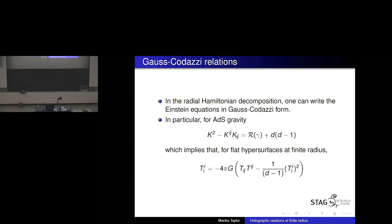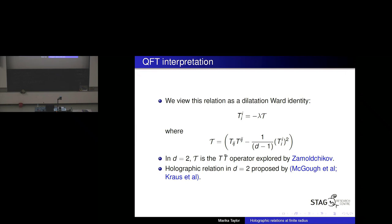What I'm arguing is that we should view this relationship as a dilatation Ward identity — lambda is proportional to the Newton constant, and the deforming operator is this quadratic combination of the stress tensor. It turns out this particular combination of the stress tensor had been discussed in the literature before. In particular, working in D=2 — the correspondence between a three-dimensional bulk and a two-dimensional field theory — this operator is precisely the TT-bar operator that Zamolodchikov had explored.